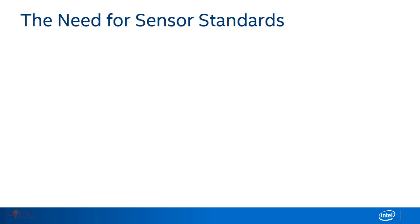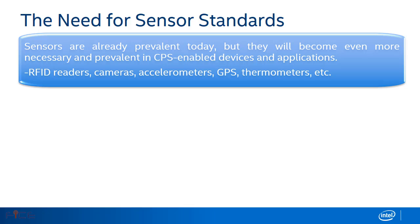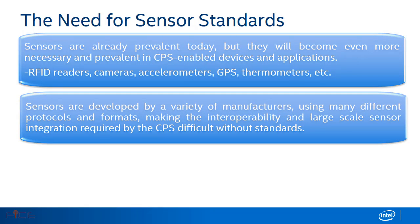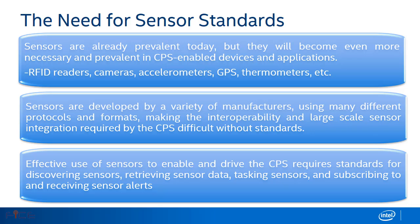Engineers are calling for a push to approve additional standards that would enable easier networking of industrial sensors. Under these specifications, sensors would be endowed with enough intelligence to identify themselves and work with any type of industrial device. Sensors are already prevalent today, but will become even more necessary in cyber-physical systems-enabled devices and applications — examples include RFID readers, cameras, accelerometers, GPS, and thermometers. Sensors are developed by a variety of manufacturers using many different protocols and formats, making interoperability and large-scale sensor integration difficult without standards. Effective use of sensors to enable and drive cyber-physical systems requires standards for discovering sensors, retrieving sensor data, tasking sensors, and subscribing to and receiving sensor alerts.